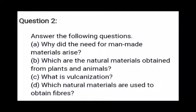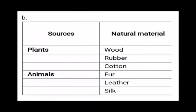B) Which are the natural materials obtained from plants and animals? From plants, we obtain wood, rubber, and cotton. From animals, we obtain fur, leather, and silk.